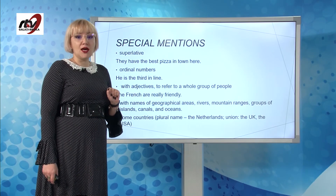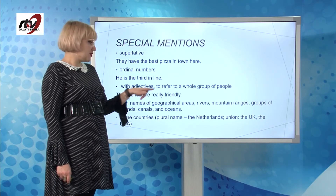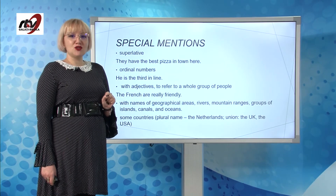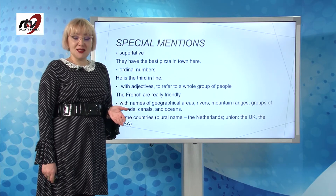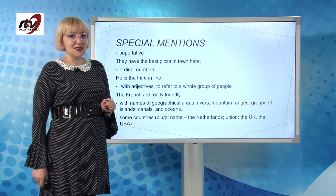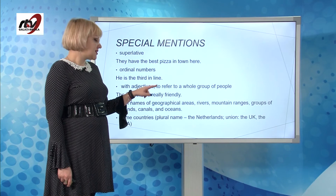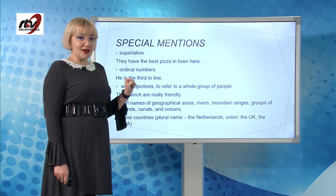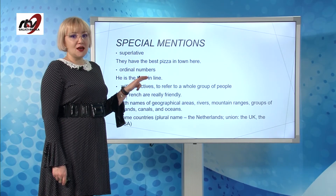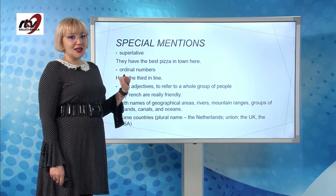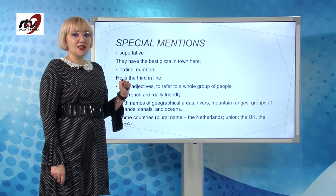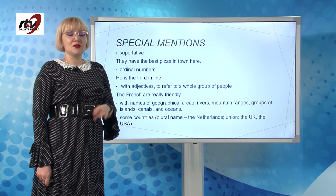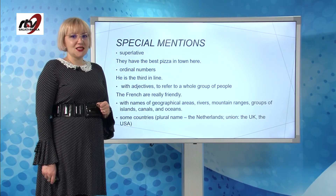Cu unele denumiri de zone geografice. Cu unele țări care apar întotdeauna la plural — the Netherlands — sau cu unele țări care formează uniuni statale. Ca în cazul Marii Britanii, care în limba engleză, chiar dacă este scris prescurtat sau întreg, va necesita folosirea articolului hotărât înaintea sa: the UK, the USA, the United Kingdom, the United States of America.